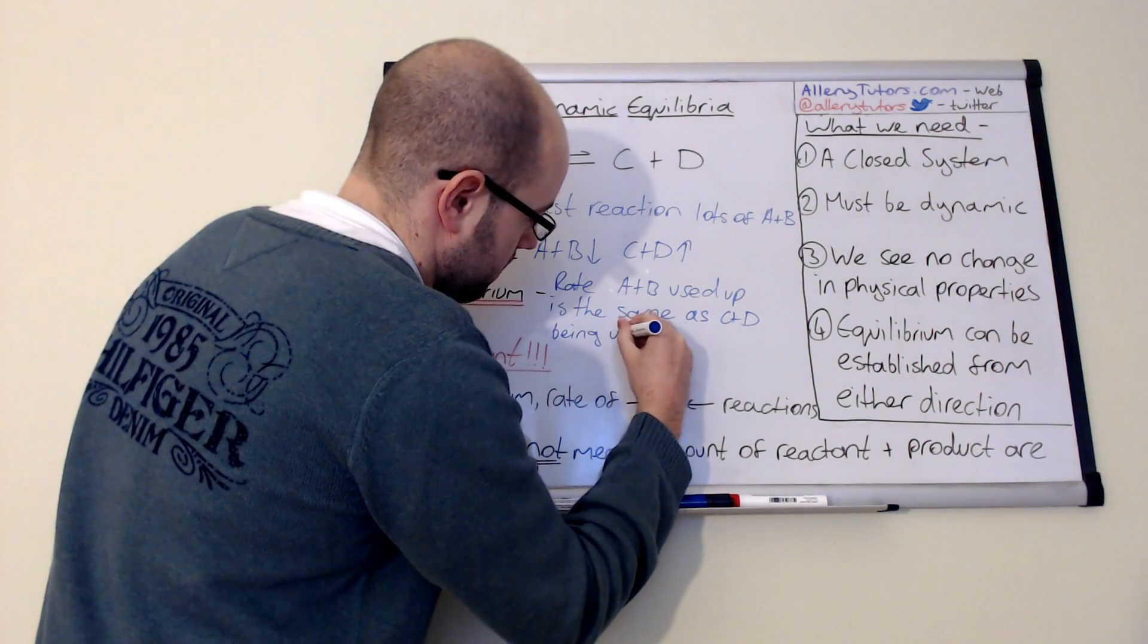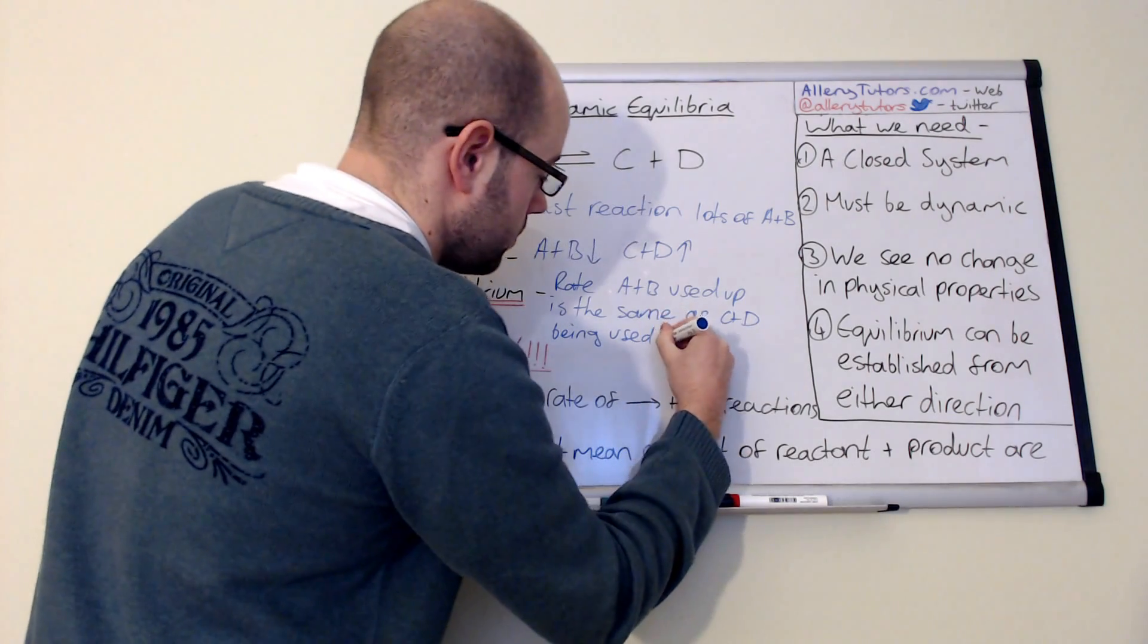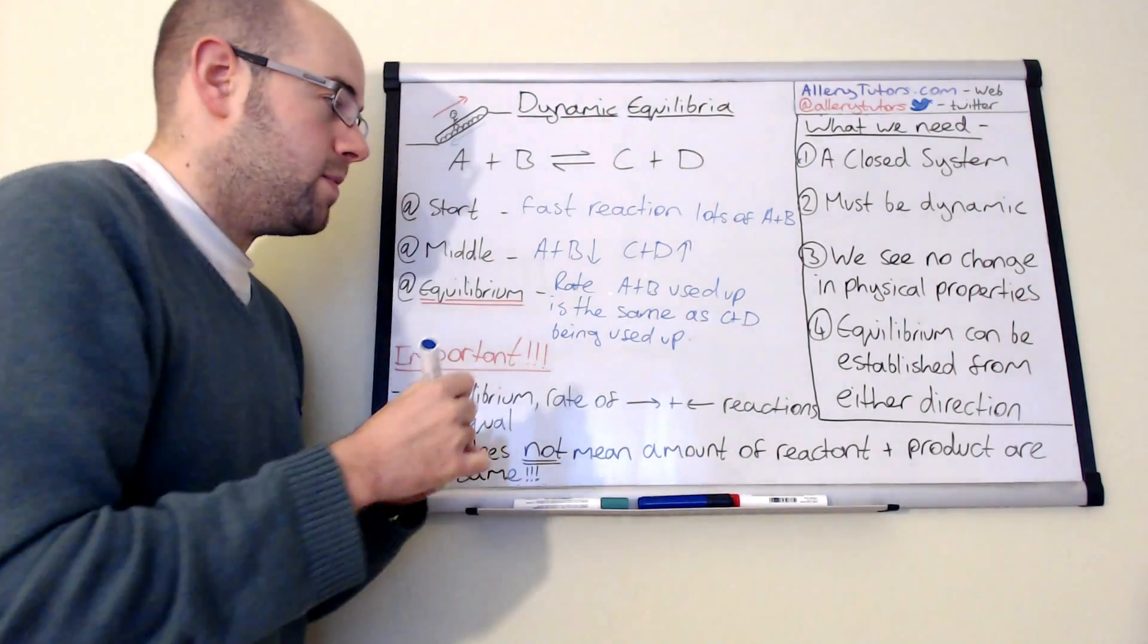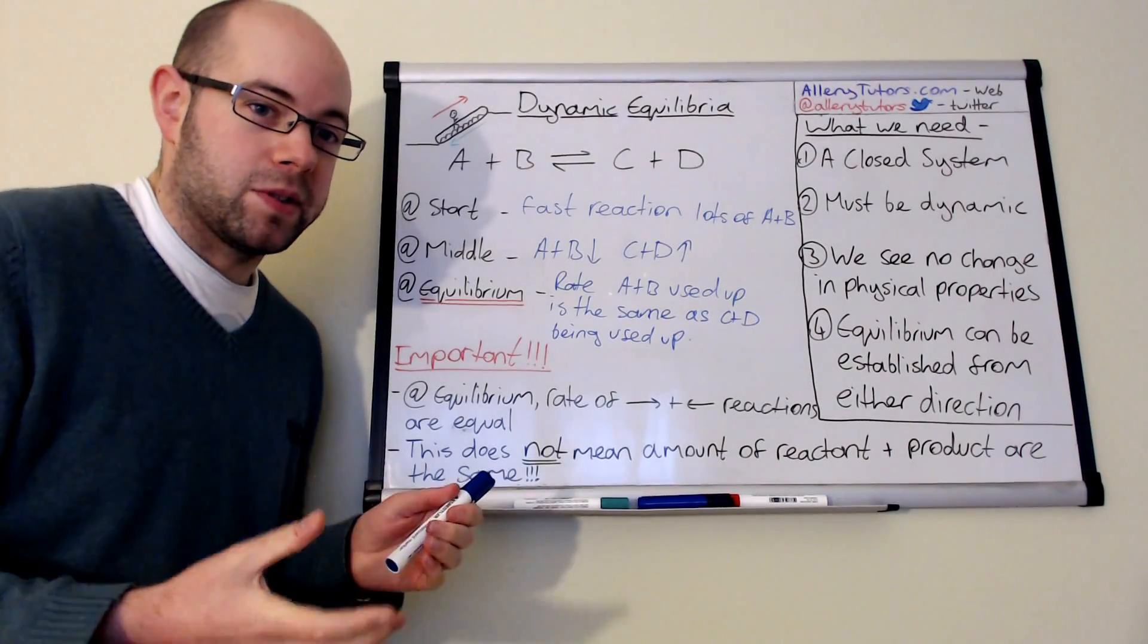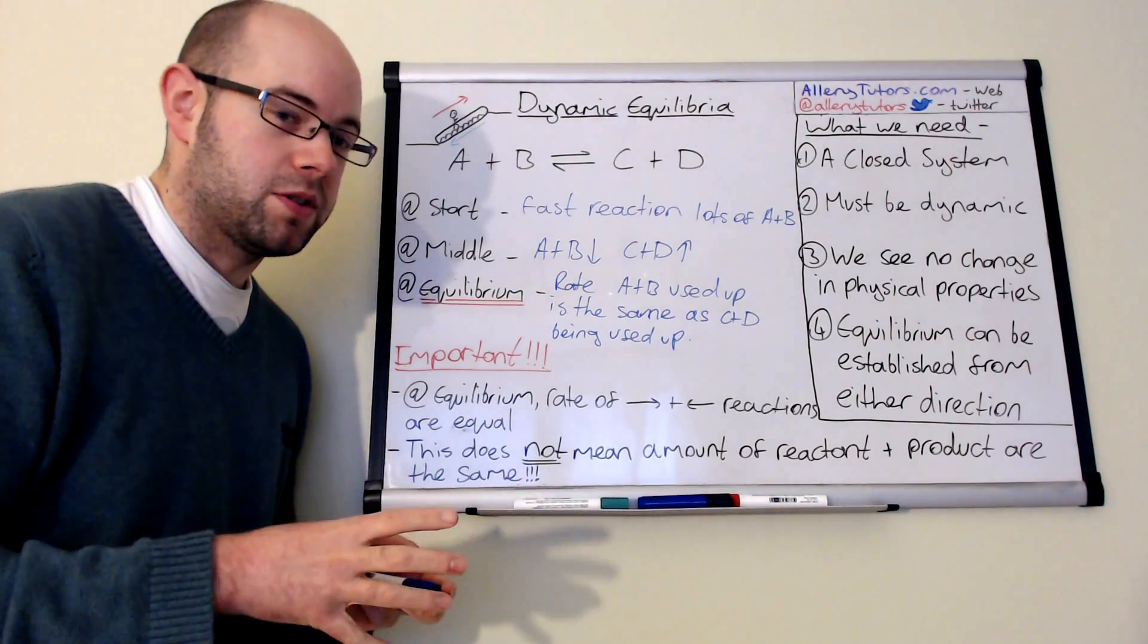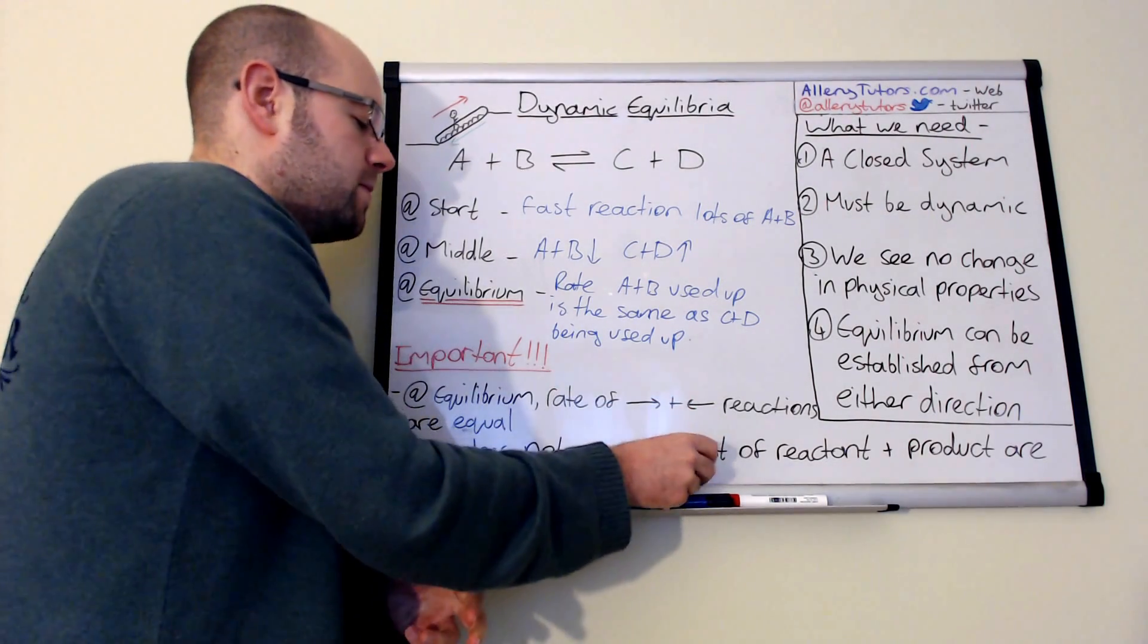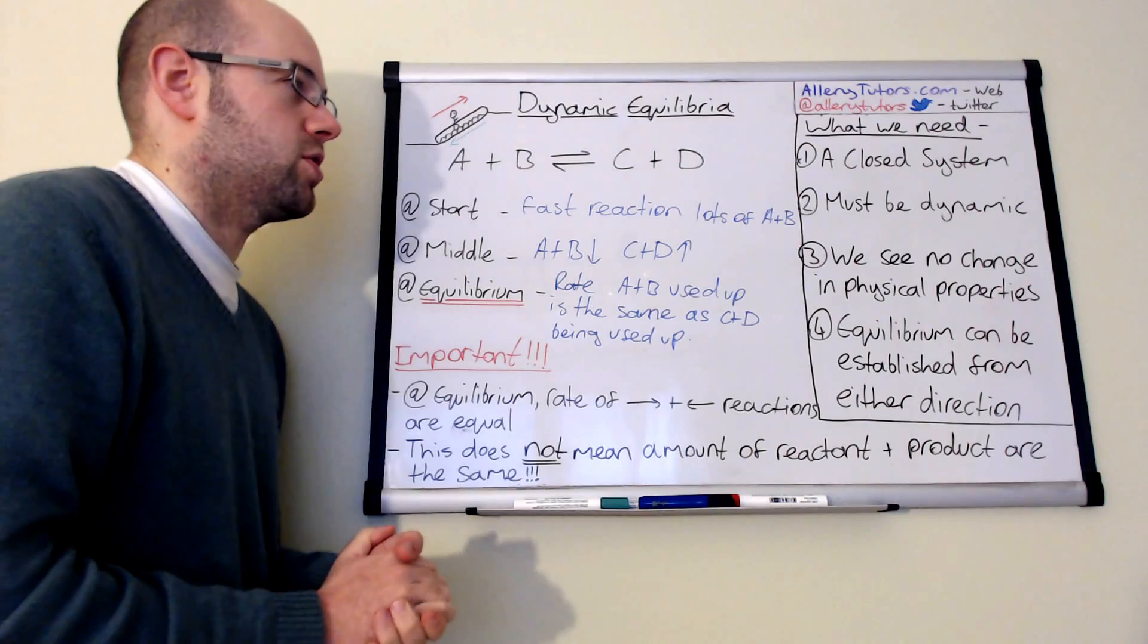And that is really important because it's nothing to do with the amount of A and B or C and D. We're not talking about the quantities. We're talking about how fast this forward and reverse reaction is occurring.